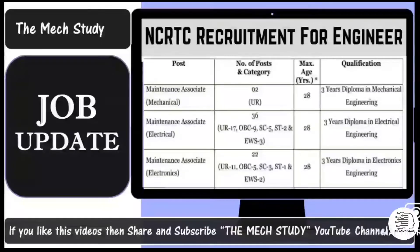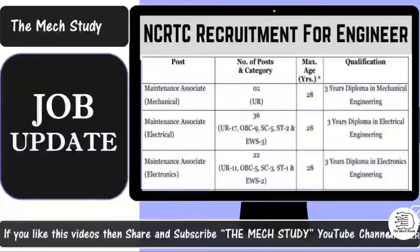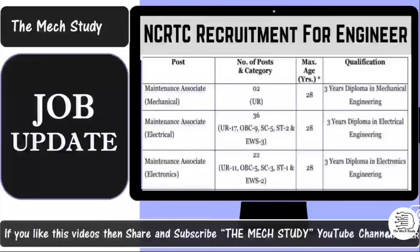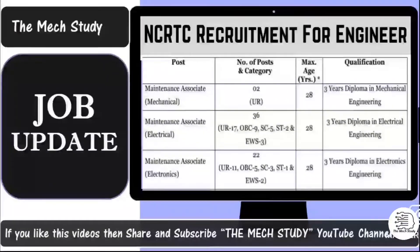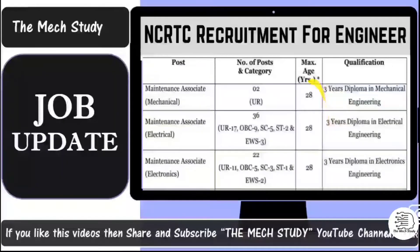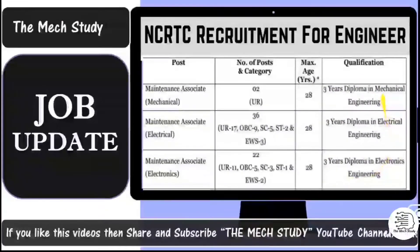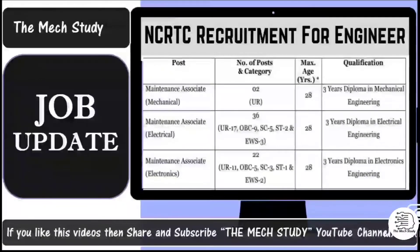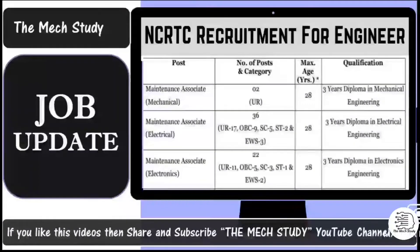For Maintenance Associate in Electrical Engineering: 17 unreserved, OBC 9, SC 5, ST 2, and EWS 3. For Electronics: unreserved 11, OBC 5, SC 3, ST 1, and EWS 2. All three posts have a maximum age limit of 28, and the qualification required is a diploma in the respective discipline. If you have done a diploma or B.Tech, you are definitely eligible to fill the form.